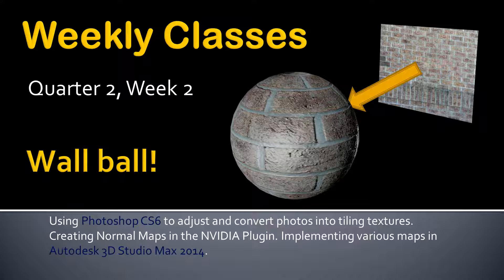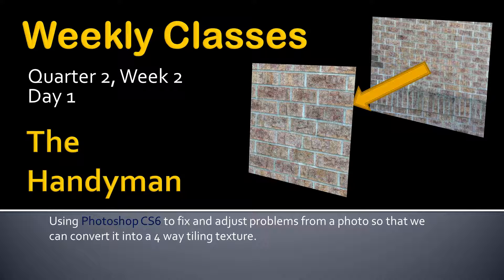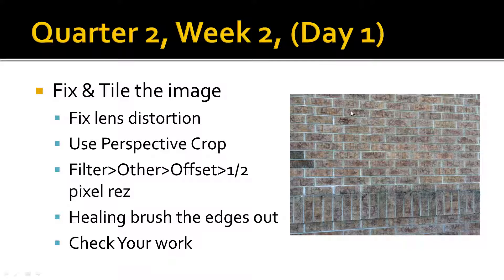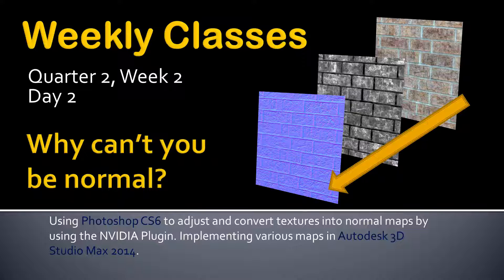So yesterday, just to recap day one: we took an image, cropped it using the perspective crop tool, adjusted some lens problems, and then used the offset filter and offset it by half the picture's width and height. The image was 1024 by 1024, so we offset it by 512 by 512. Then we used the healing brush to brush the edges out and make sure the seams in the center were perfectly aligned. Then we checked for hot spots and finalized the whole thing.